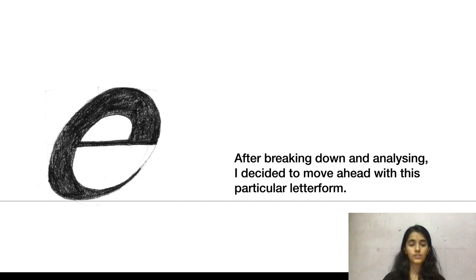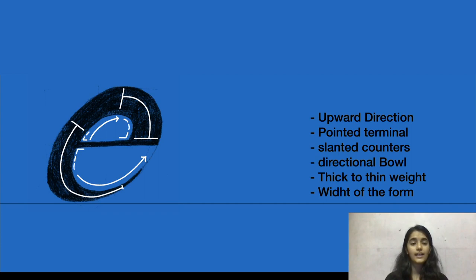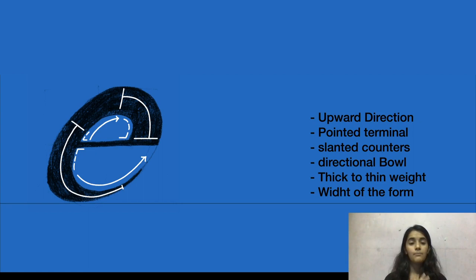This is the chosen one. A little breakdown of the attributes I could find in it: the whole form has an upward movement, an upward direction, and even the counters have this tension — a slanted, angled movement to them. There are pointed terminals, and there is a thick-to-thin stroke weight value in it. I think the width of the form itself also acts as one attribute.